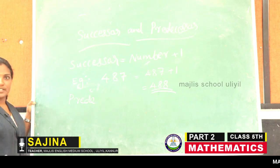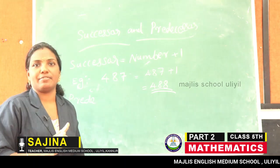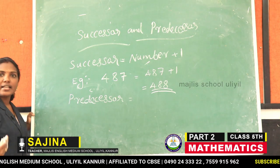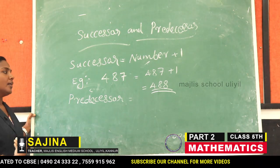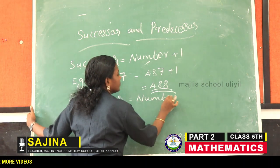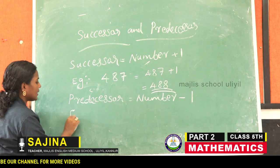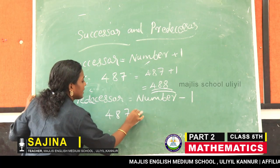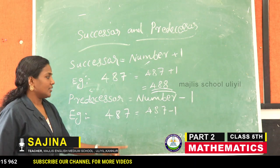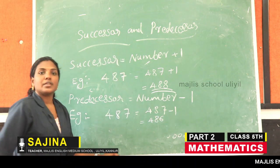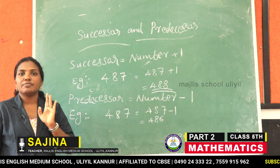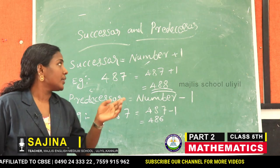What is the predecessor? Predecessor means one less than the given number. Predecessor is one less than the given number, or it comes just before the number. Predecessor equals number minus one. For example, predecessor of four hundred eighty-seven: four hundred eighty-seven minus one equals four hundred eighty-six. The number just before is called the predecessor, and the number just after is called the successor.